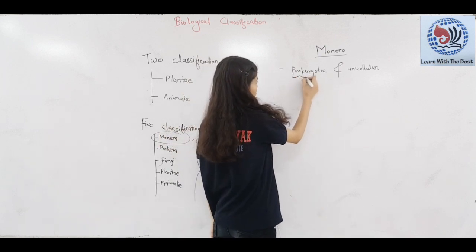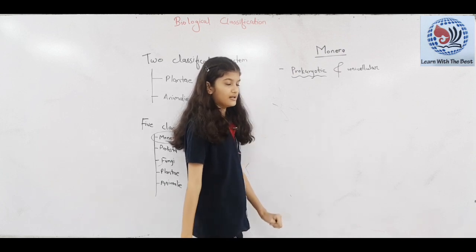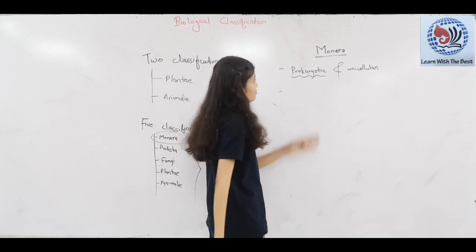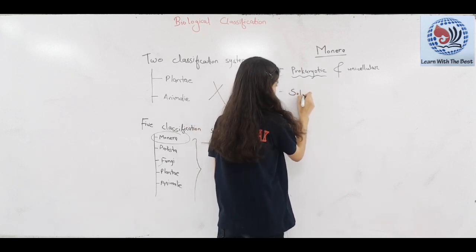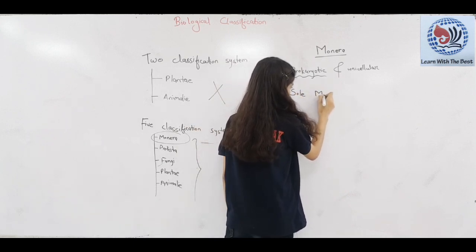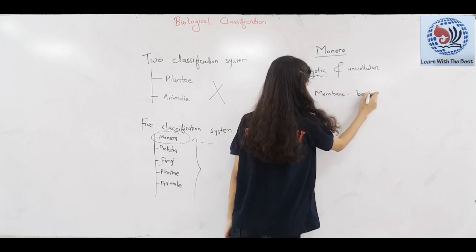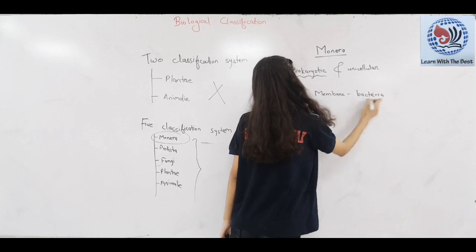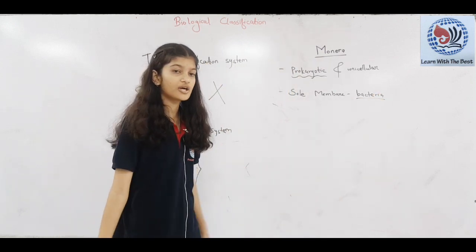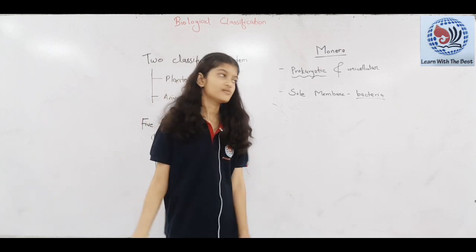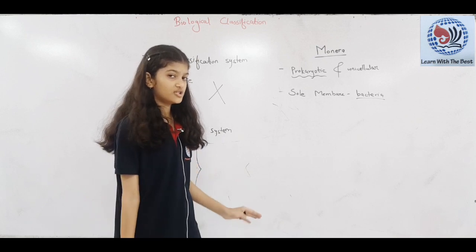Prokaryotic means there is no defined nucleus. Unicellular means it is a one-celled organism. We know that bacteria is a micro-organism, so they are present in every area — they are present on our hands and everywhere. Their size is very small.